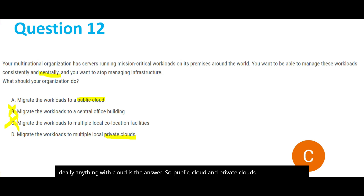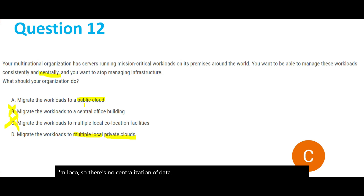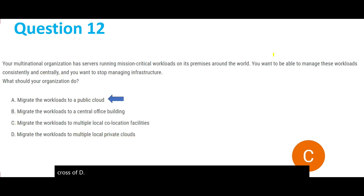Now why is A the answer and not D? Option D says migrate the workloads to multiple local private clouds — multiple and local — so there is no centralization of data. In public cloud, data is in one place: centralization. There is no centralization in D, so we cross out D. So A is the answer for question 12.